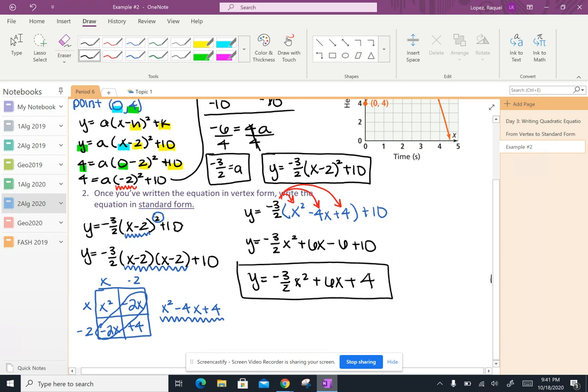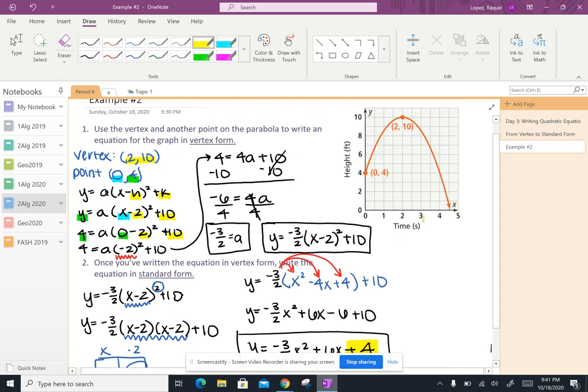And there is my standard form. And a quick check for me is that I can get my y-intercept from the last number here, from that constant. So it says my y-intercept should be 4. I can check that on the graph and my y-intercept is indeed 4.